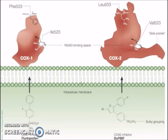The difference will be the amino acid that makes up the enzyme. For COX-1, we have isoleucine at position 523. Whereas for COX-2 enzyme, we have valine instead at position 523. Valine is actually less bulky compared to isoleucine. Thus, valine actually creates more space to fit in a bulkier group of drugs.